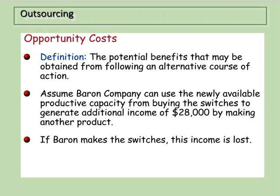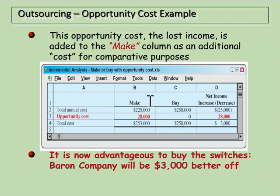A bigger question: what if we can use that freed capacity to make something else? Maybe we can generate additional income of $28,000 by making another product. We let someone else make our switches, we make another product, and earn an extra $28,000. If we make the switches ourselves, we forgo this additional income — that's an example of opportunity cost. Running the analysis: if we make the switches there's a $28,000 opportunity cost; if we buy them it costs $250,000. We are now better off buying the switches and making the other products, gaining an additional $3,000.